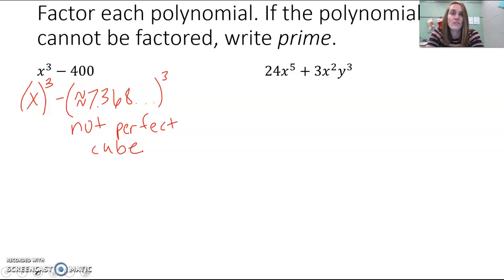And there's no greatest common factor. X cubed and 400 don't have anything in common. It's not going to be a quadratic form. You can't group it because it's just two terms. So in this case, our answer would actually be prime.